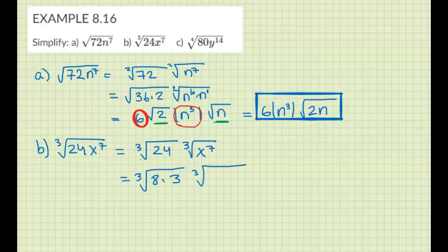For this one, 7 does not divide by 3, but 6 does. So I'm going to say x to the 6 times x to the 1. Alright?